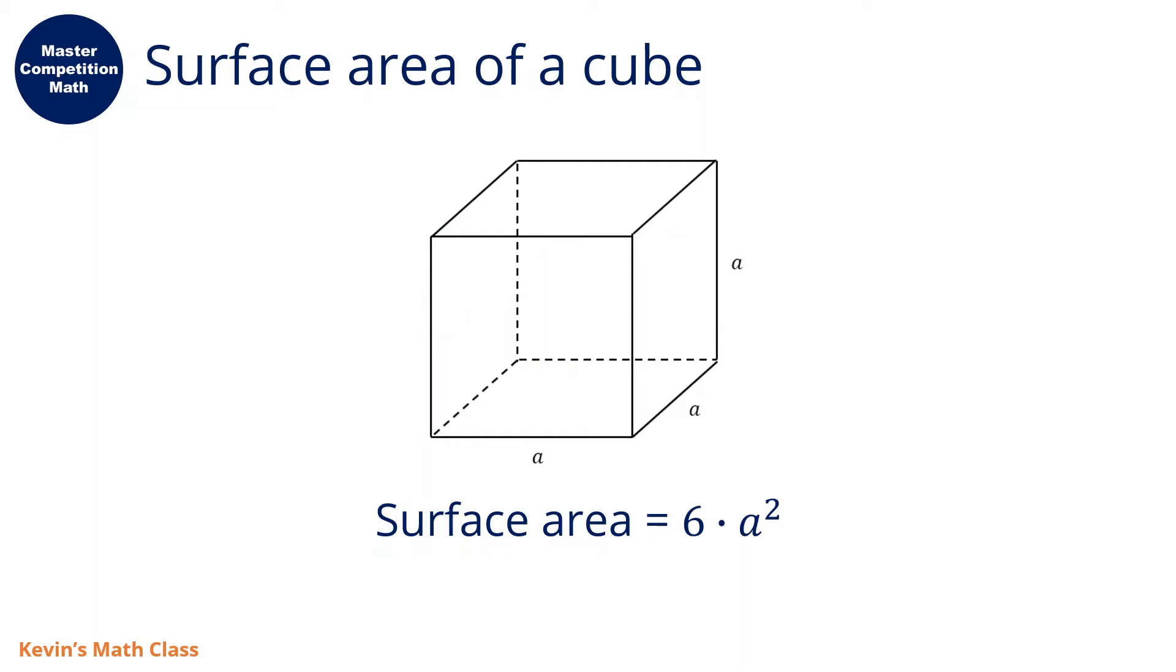Let's first review the surface area of a cube. If we have a cube, each side is a. So we know the surface area, there are six faces and each face is a square. So the total surface area will be 6 times a squared. This is very simple.